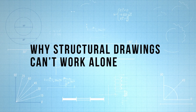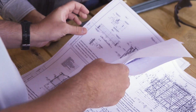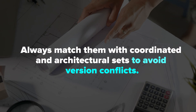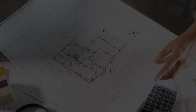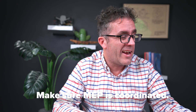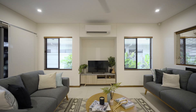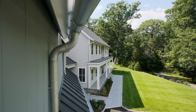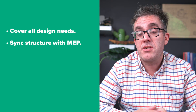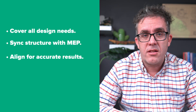Structural drawings aren't standalone documents. You need to coordinate with architectural drawings to make sure they match — you don't want two sets of drawings with different versions. You might be on version one while the architect is on version five, a completely different design, which can lead to building the wrong thing in the wrong location. You also need to coordinate with MEP — no building is all structure. You need lights, air conditioning, ventilation, drainage, and all those things must be accommodated and cross-coordinated between structure and MEP.